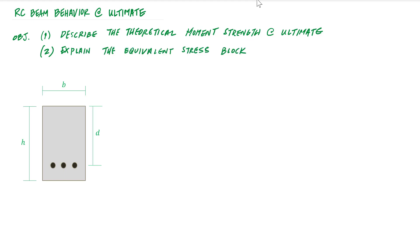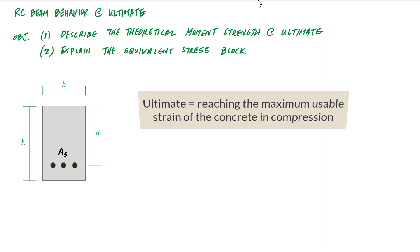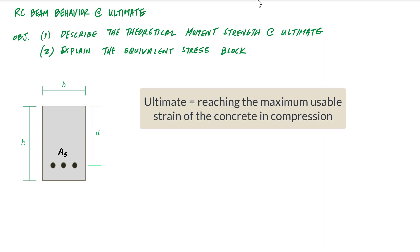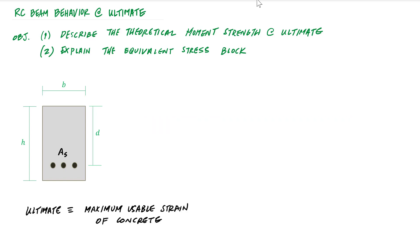To get started, I have a reinforced concrete section with width B, height H, and depth D from the extreme compression fiber to the center of the tension reinforcement. This is the area of steel reinforcement. The first thing we want to consider is ultimate — what does ultimate mean? Ultimate means we are reaching the maximum usable strain of the concrete in compression, and this is how we define failure.